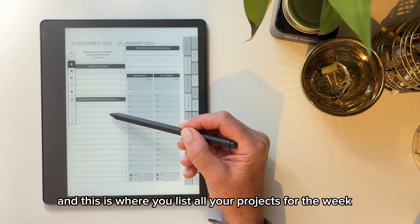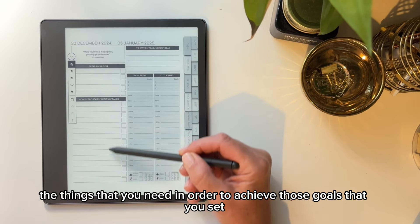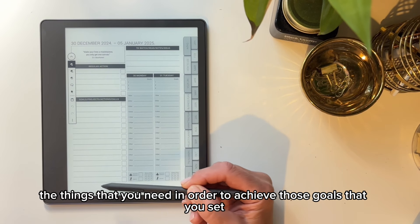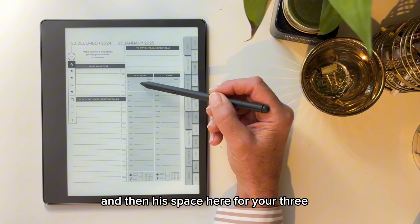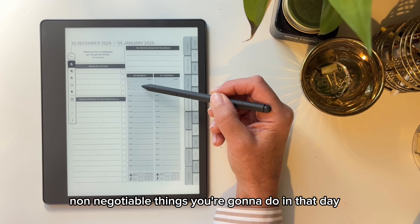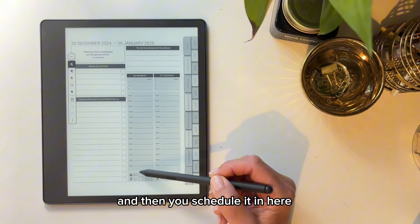And this is where you list all your projects for the week. These are all the things that you need in order to achieve those goals that you set at the beginning of the month. And then here's space here for your three non-negotiable things you're going to do in that day. And then you schedule it in here.